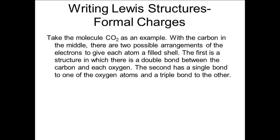If we take the molecule CO2, for example, we have 16 valence electrons. With the carbon in the middle, we have four electrons on the two single carbon-oxygen bonds, leaving 12 electrons, which are just enough to fill the two oxygen atoms, but leaving the carbon with only four electrons in the two bonds. To fill the carbon, we need to make two more bonds, but there are two different ways to do this.